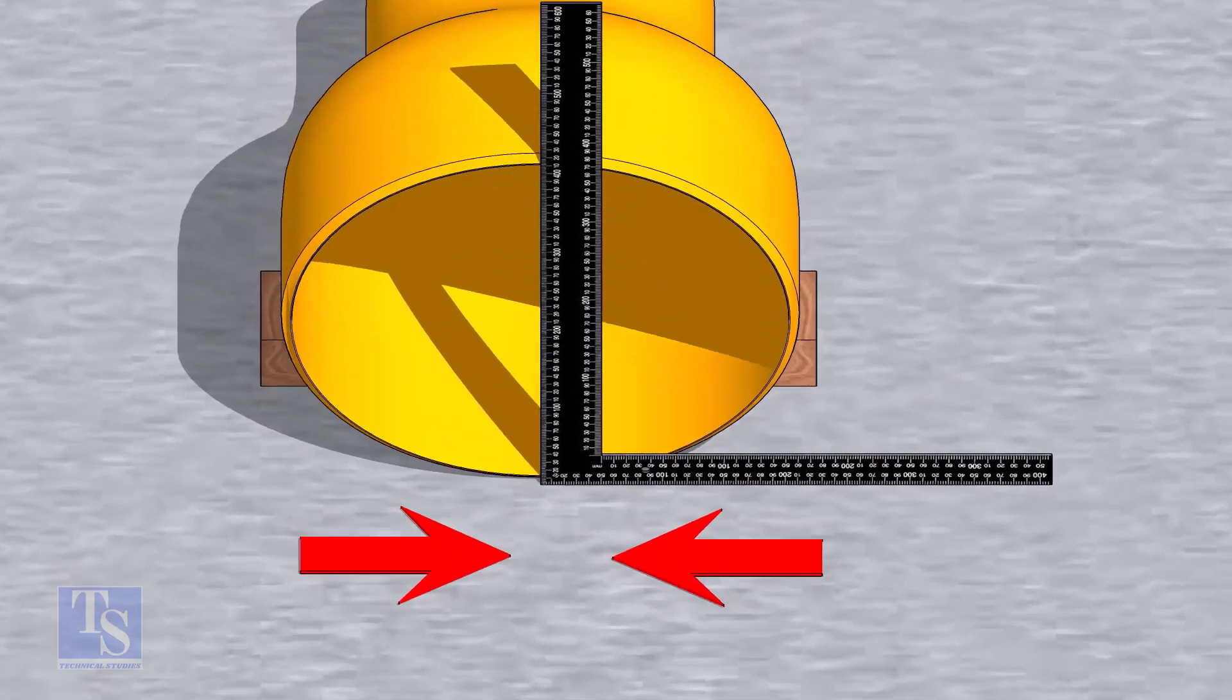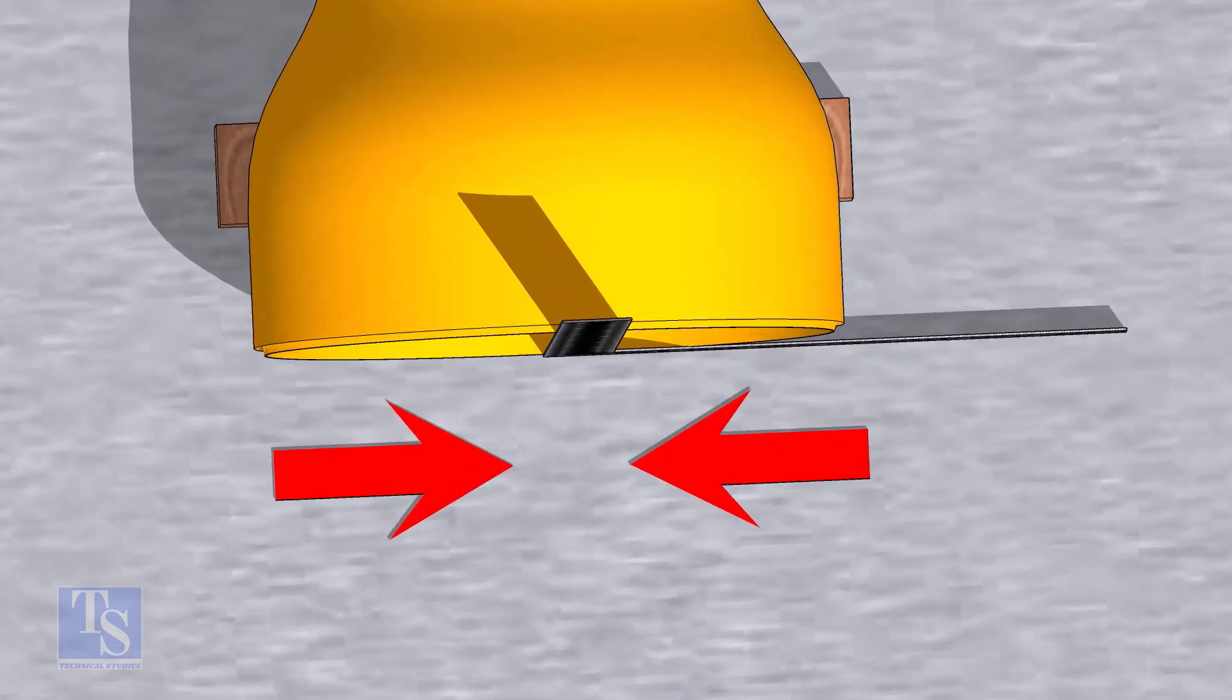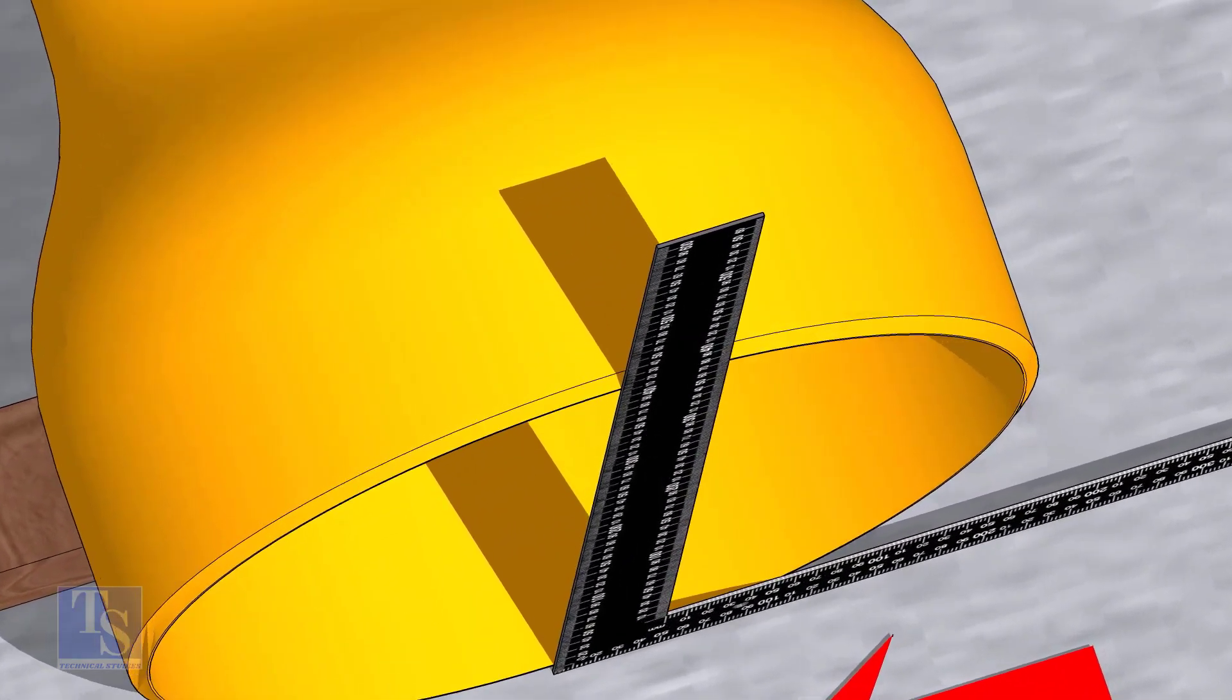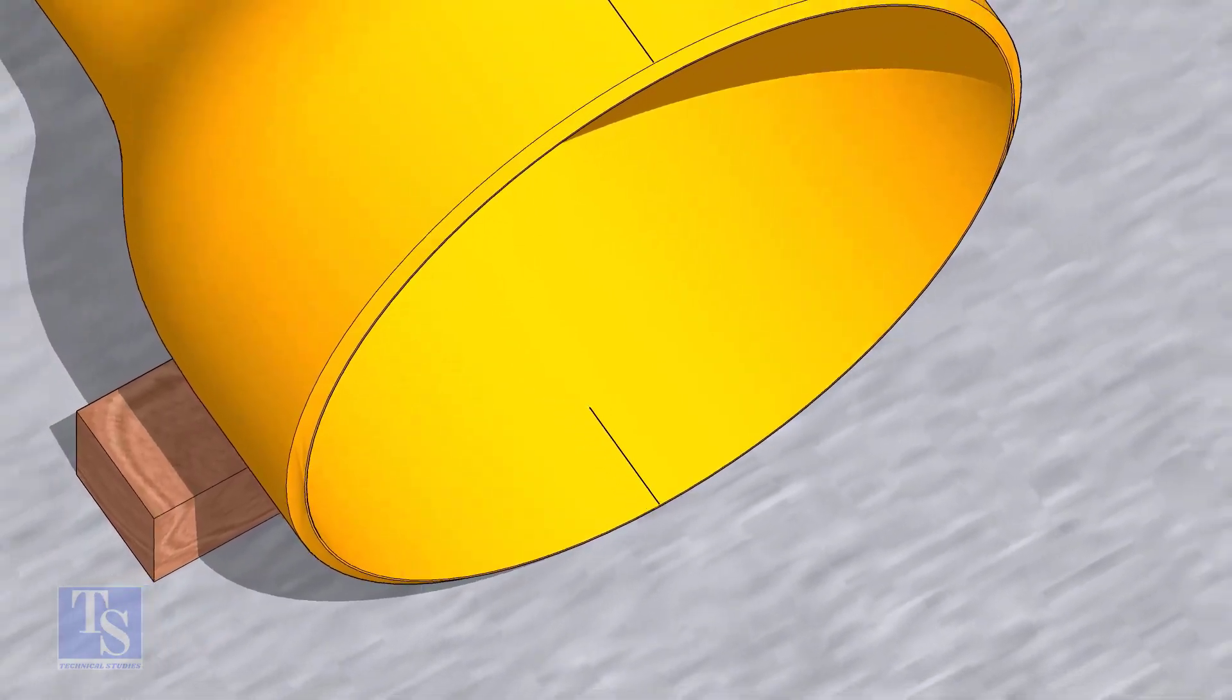Mark lines where the right angle touches the reducer, as shown. Transfer this marking to the outer face later.